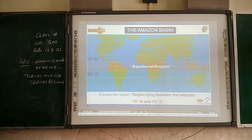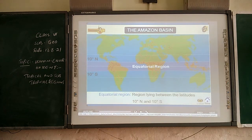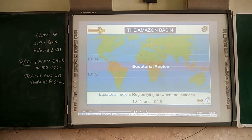The Amazon basin is located in the equatorial region, which lies between 10 degrees north and 10 degrees south of the equator. Almost all of the equatorial region lies green, spanning 0 to 10 degrees of both north and south latitudes.